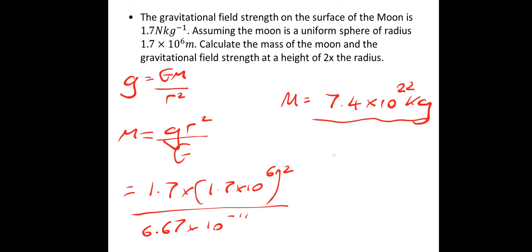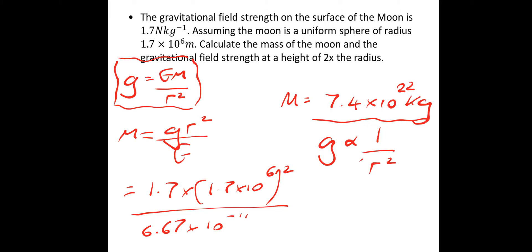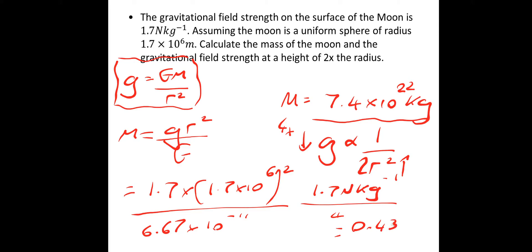To get the gravitational field strength at double the radius, we know g is proportional to 1 over r squared. If we double the radius, 2 squared is 4, so the denominator gets 4 times greater — and because it's an inverse proportion, the field strength gets 4 times less. So we do 1.7 newtons per kilogram divided by 4, which gives 0.43 newtons per kilogram.